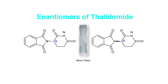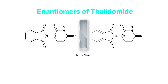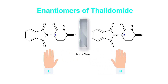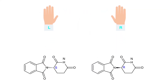Thalidomide is a terrible instance of the potential interaction difference between enantiomers of chemical compounds. The left and right-hand molecules are shown here. When thalidomide was initially developed, it demonstrated anti-nausea and sedative effects as a result of the R enantiomer and was prescribed to pregnant mothers.